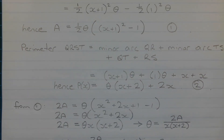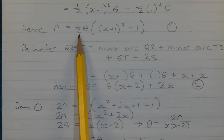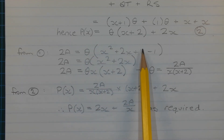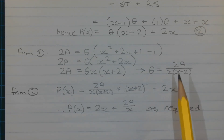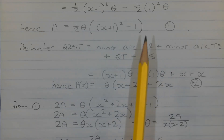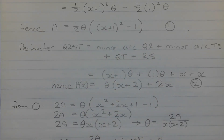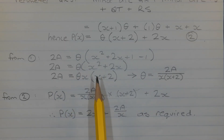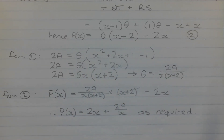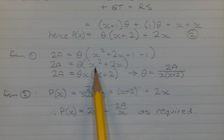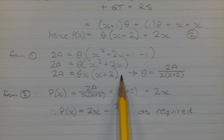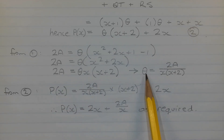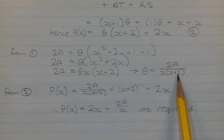From equation number 1, multiplying both sides by 2: 2a equals theta times open bracket x squared plus 2x plus 1 — expanding (x plus 1) squared — minus 1 close bracket. So 1 minus 1 cancels to 0, giving 2a equals theta times (x squared plus 2x). Factorizing out x from inside the brackets: 2a equals theta times x times (x plus 2). Making theta the subject, dividing by x times (x plus 2): theta equals 2a over x times (x plus 2).